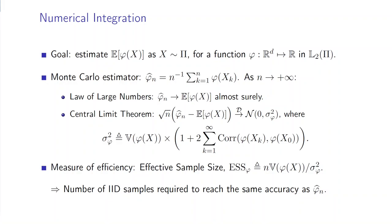We can measure the sampling accuracy by the Effective Sample Size, defined as n times this ratio of variances. This ESS measures the number of IID samples required to reach the same accuracy as our Monte Carlo estimator.